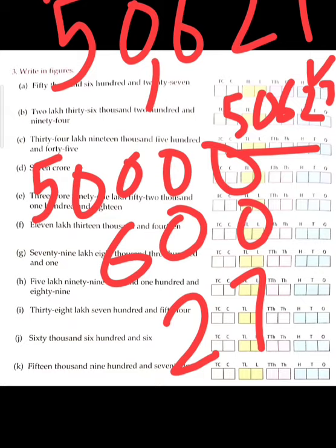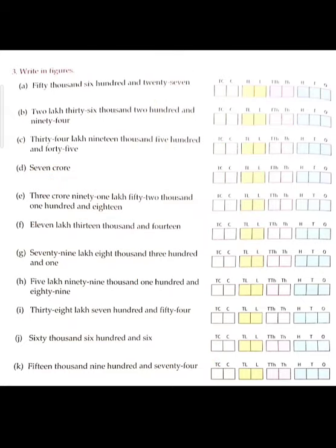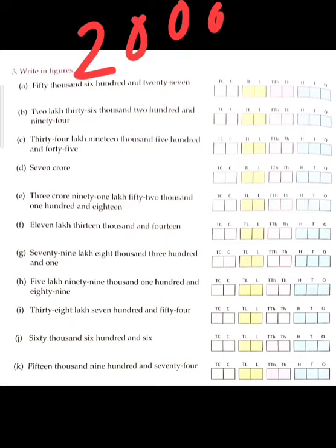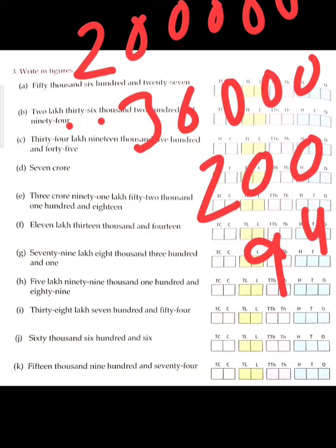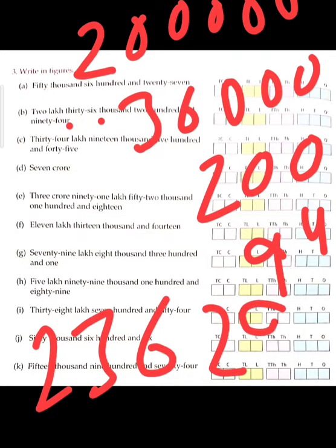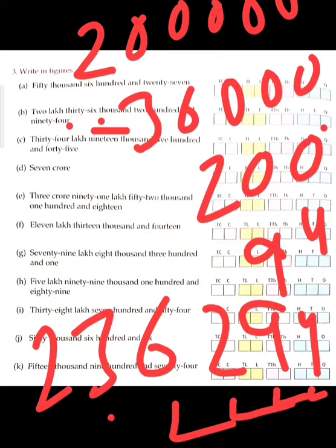Now the B one: 2 lakh 36,294. 2 lakh means 2 has 5 zeros after it. The number is 2,36,294. Ones: four, tens: nine, hundreds: two, thousands: six, ten thousands: three, lakhs: two. We write 2, 3, 6, 2, 9, 4.